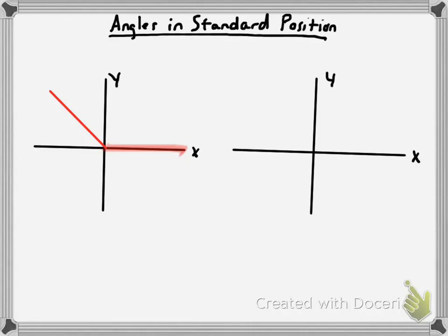The angle is measured in relation to the initial side. We're going to call the initial side zero degrees, and we're going to go counterclockwise. So 90 degrees would be straight up, 180 degrees once you get all the way to the negative x-axis, 270 degrees at the bottom, and then if you get all the way back you'd have a 360 degree angle.